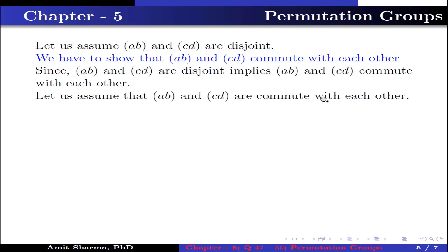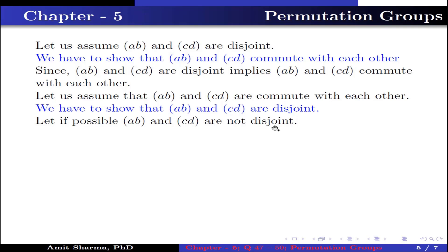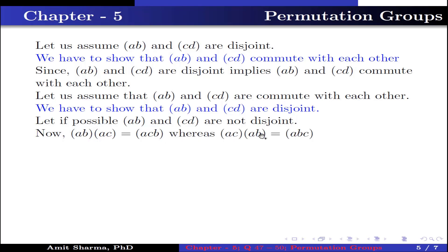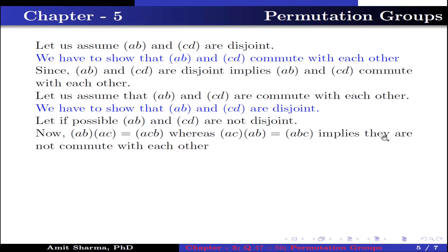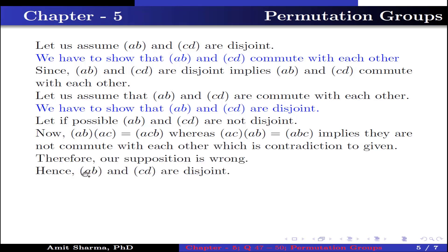Now assume that (a b) and (c d) commute. We have to show they are disjoint. Suppose for contradiction that they are not disjoint. Taking one common element, say (a b)·(a c) = (a c b) — because A maps to C, C maps to C giving C, then A maps to B meaning C maps to B, and B maps back to A. Meanwhile (a c)·(a b) = (a b c) — A maps to B, B maps to B so A maps to B, then B maps to A and A maps to C giving B maps to C, C maps back to A. This shows they do not commute, which is a contradiction. Therefore our supposition is wrong, and hence (a b) and (c d) are disjoint.